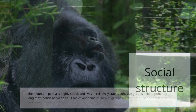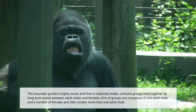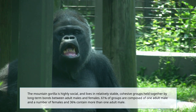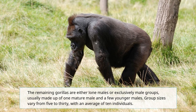The Mountain Gorilla is highly social, and lives in relatively stable, cohesive groups held together by long-term bonds between adult males and females. 61% of groups are composed of one adult male and a number of females, and 36% contain more than one adult male. The remaining gorillas are either lone males or male groups, usually made up of one mature male and a few younger males. Group sizes vary from 5 to 30, with an average of 10 individuals.